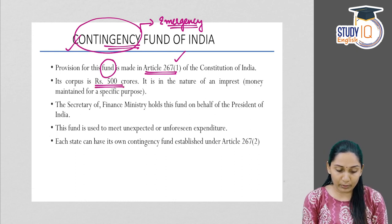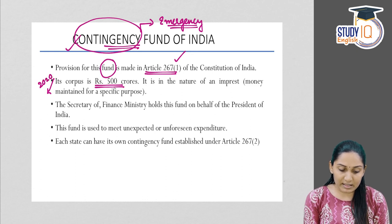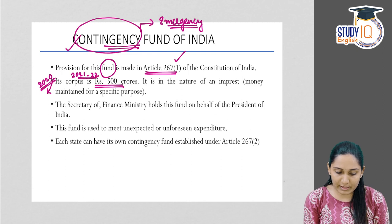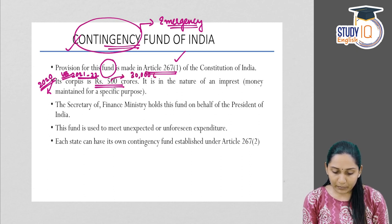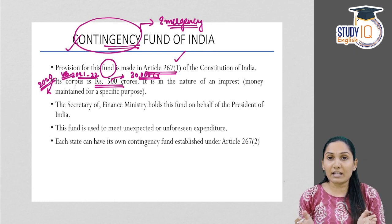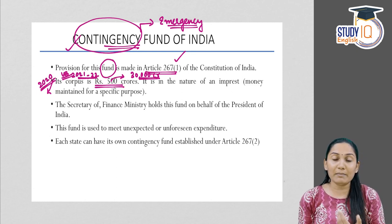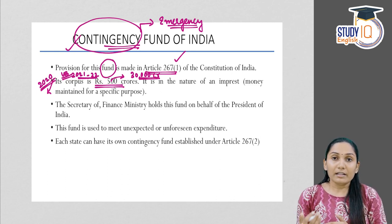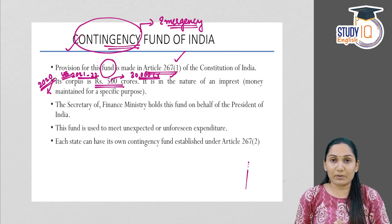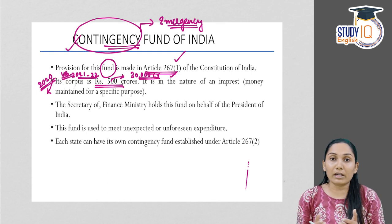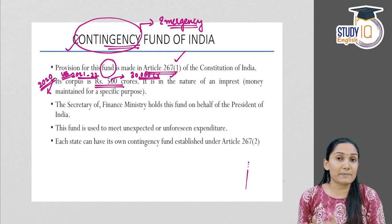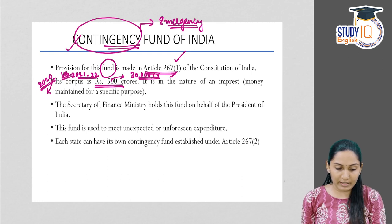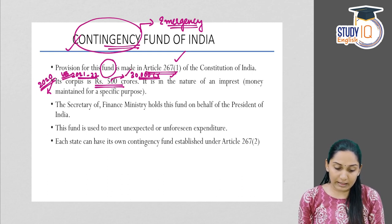The corpus of the fund is 500 crore, but in the year 2020, while presenting the Union Budget 2021-22, a finance bill proposed to increase its corpus to 30,000 crore. The rationale behind increasing the corpus is to be risk-free against unexpected situations. In 2020, India and the whole world had to confront a highly unexpected emergency — the COVID-19 pandemic — and 500 crore rupees would not be sufficient to deal with such emergencies.